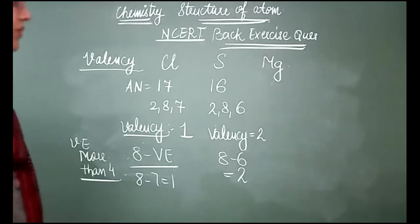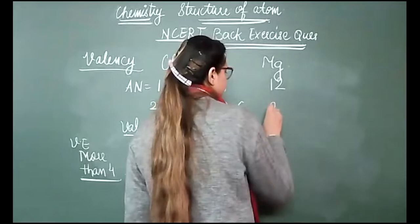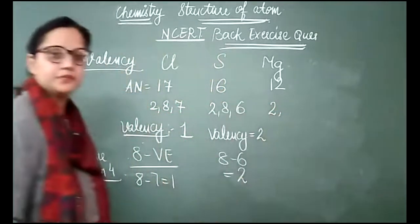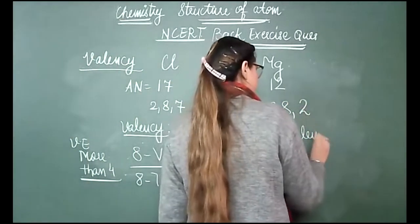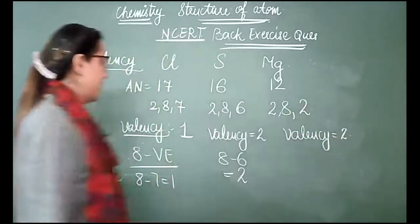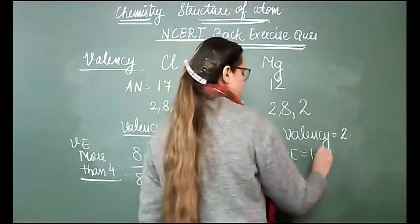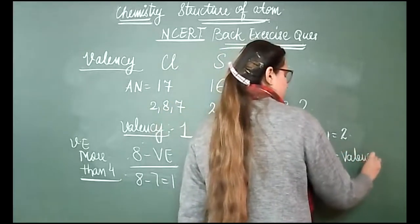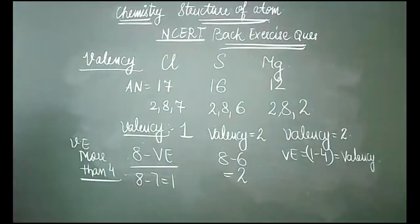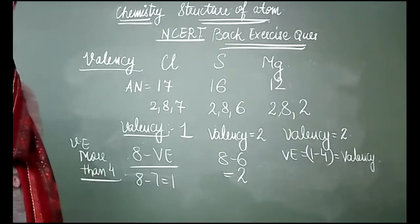For magnesium, the atomic number is 12 and the electronic configuration is 2,8,2. We apply the formula: if valence electrons are between 1 and 4, the valency is equal to the number of valence electrons.